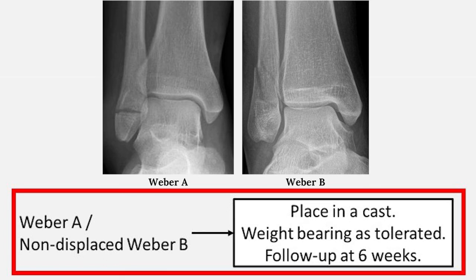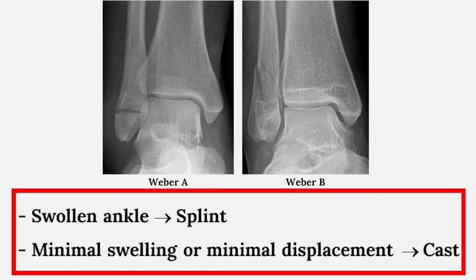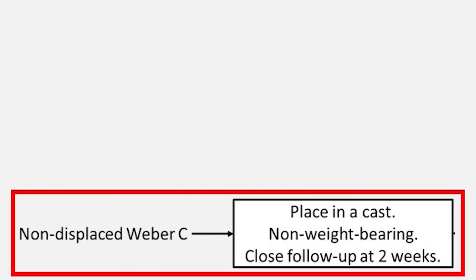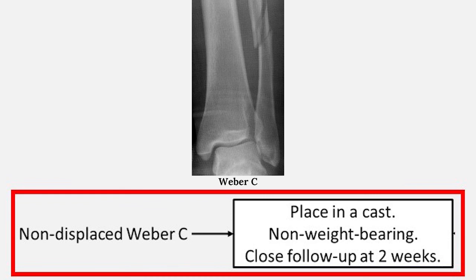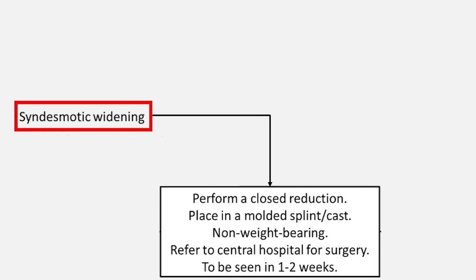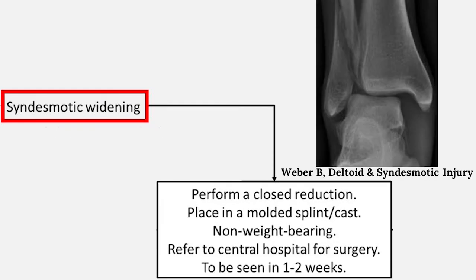If the ankle is initially very swollen, a splint should be applied. However, if there is minimal swelling and little displacement, casting is appropriate as an initial modality. Patients with Weber C fractures but an otherwise non-displaced mortise should be treated in a cast. They should not weight bear and require close follow-up to detect displacement on x-rays. Ankle fractures that present with syndesmotic widening require closed reduction, immobilization, and referral to a facility where surgery is available.